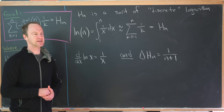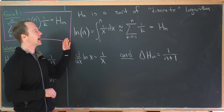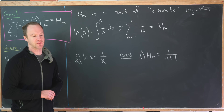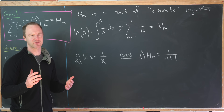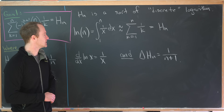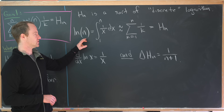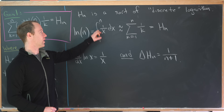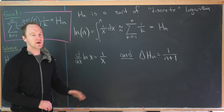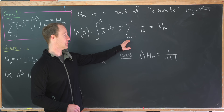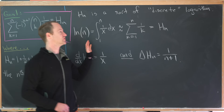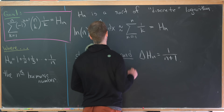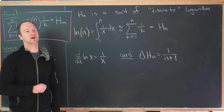Harmonic numbers are a discrete version of the logarithm. The natural log of n can be written using the fundamental theorem of calculus as the integral from 1 to n of 1/x dx, but that can be approximated by the sum as k goes from 1 to n of 1/k, which is exactly the nth harmonic number.